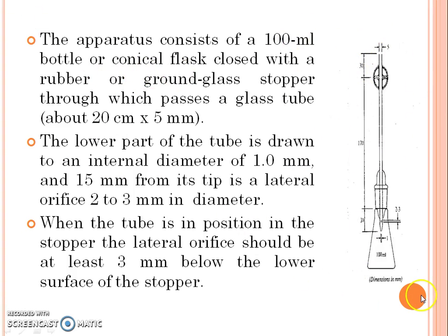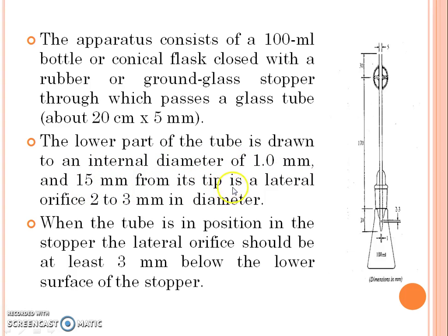The apparatus contains: a 100 ml bottle or conical flask closed with a rubber or ground glass stopper, through which passes a glass tube about 20 cm long. The lower part of the tube is drawn to an internal diameter of 1 mm and 15 mm from its tip is a lateral orifice having a diameter of 2 to 3 mm. When the tube is in position in the stopper, the lateral orifice should be at least 3 mm below the lower surface of the stopper.